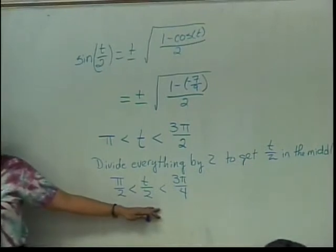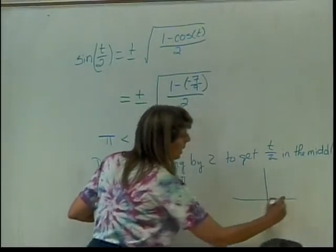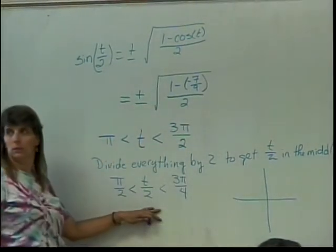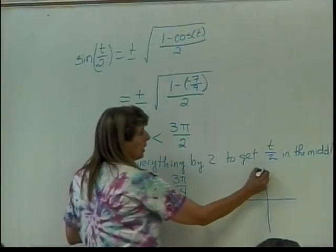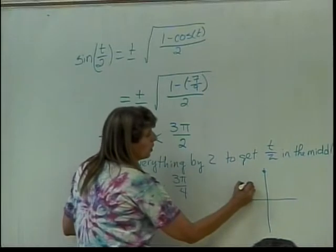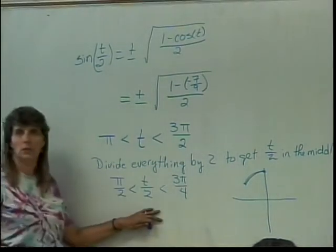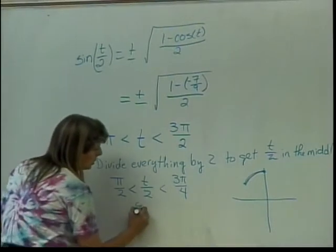Where is this? It's going to be in quadrant 2, and in case you want to check it out, where's pi over 2? Pi over 2 is right here. Where's 3 pi over 4? Right here. So T is somewhere between here and here when we're going around. So this is quadrant 2.